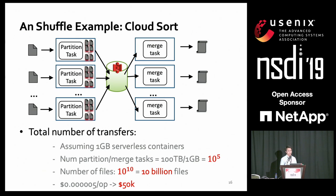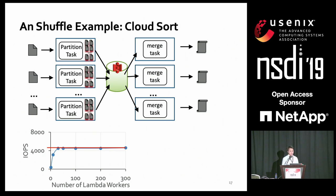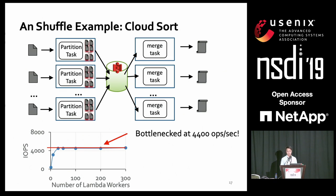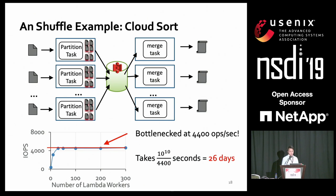Beyond the cost, S3 also cannot deliver good performance. We found that S3 has a limit of around 4,400 operations per second for a particular object size. Dividing the total number of requests by S3's IOPS, we find that just writing all outputs to S3 would take 26 days. In summary, a cost storage system like S3 lacks cheap and elastic IOPS support to serve as a shuffle medium for analytics stages.